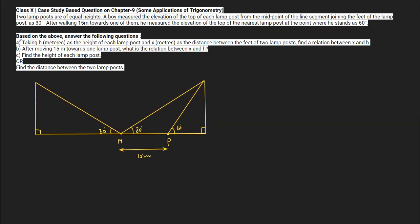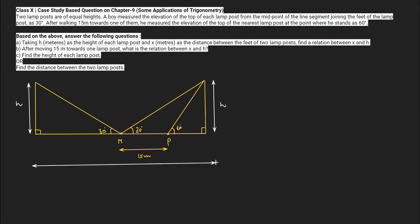In part A of the question, we take h meters as the height of each lamppost and x as the distance between the two feet of the lampposts. So the total distance between the two lampposts is x. We have to find the relation between x and h. Since M is the midpoint, the distance from each lamppost to M is x by 2.